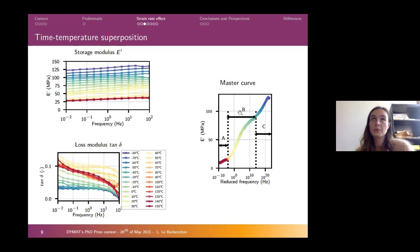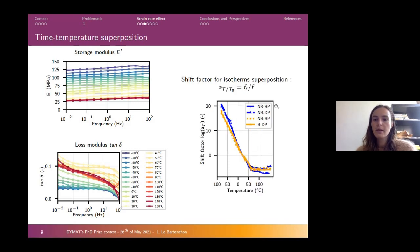To obtain this master curve, you have to use shift factors by moving each curve. Here you can draw the shift factors depending on the temperature. This is the time-temperature superposition for small strains without the structure effect.